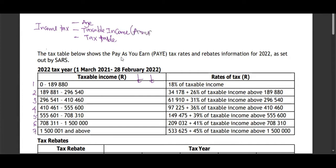It's supposed to be annual. If you don't have a taxable income, we shall always say: gross income minus pension, then multiply by 12. Then you get your annual taxable income.